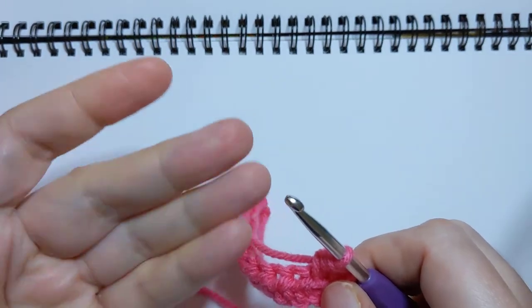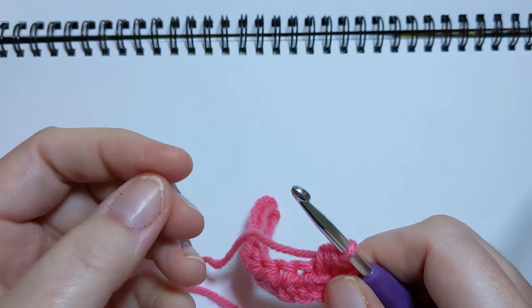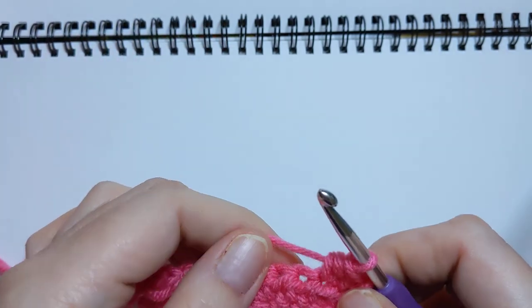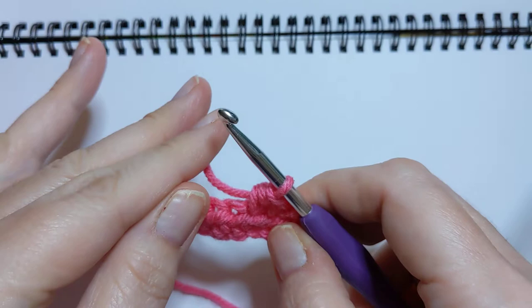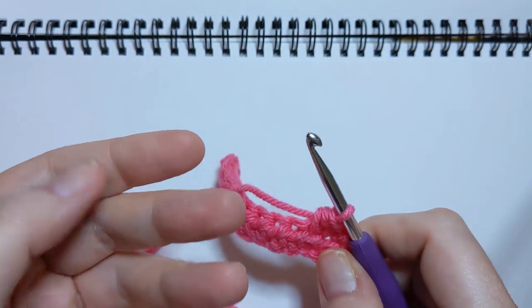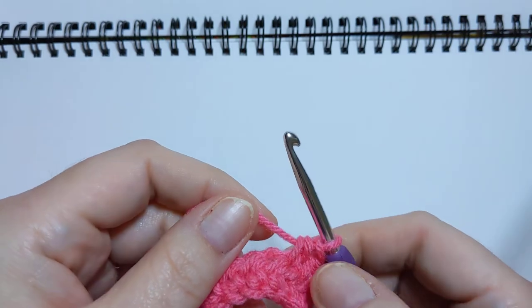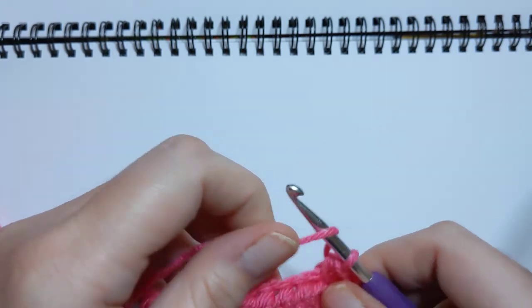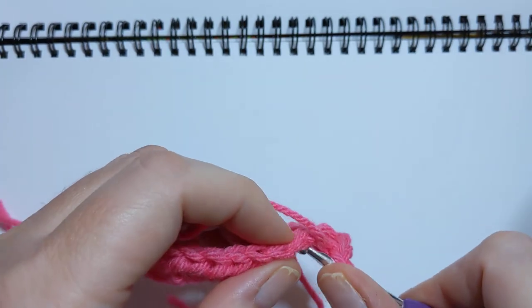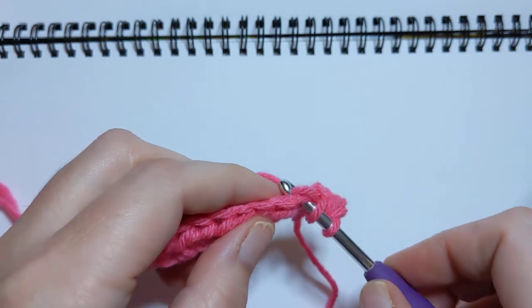But if it's time to decrease or crochet two half double crochets together, it's just a little bit different. It's not difficult, it's just something to remember that's just a smidge different. You start off like normal: you yarn over, go through that stitch, pull up a loop.